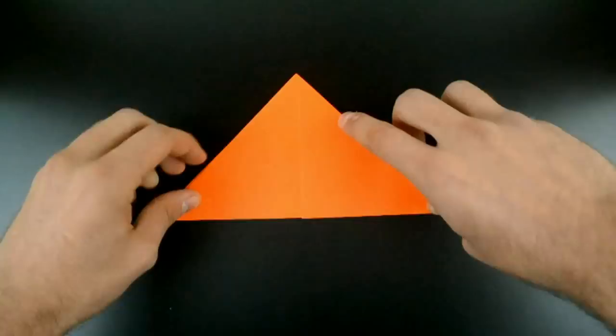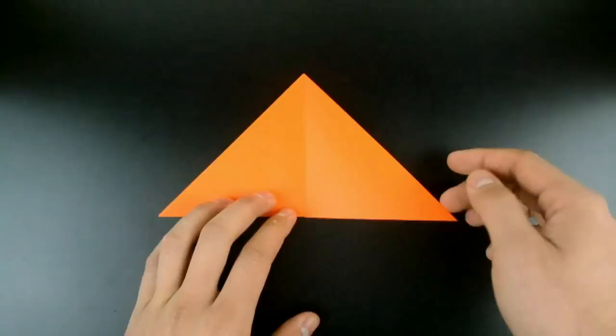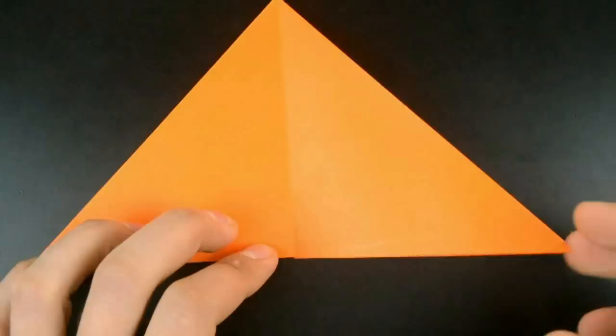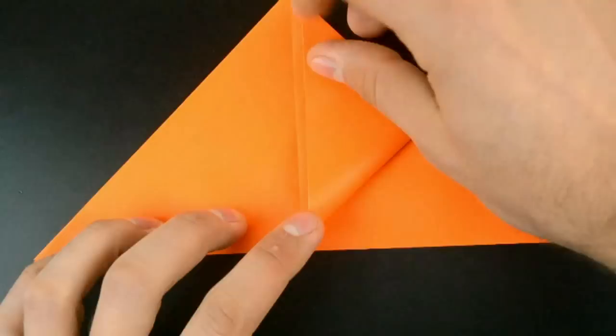Now on the first flap of the right side we need to fold the bottom edge, this one here, to the middle just like that.